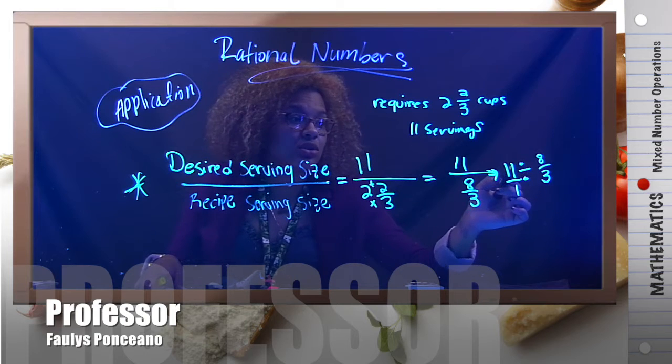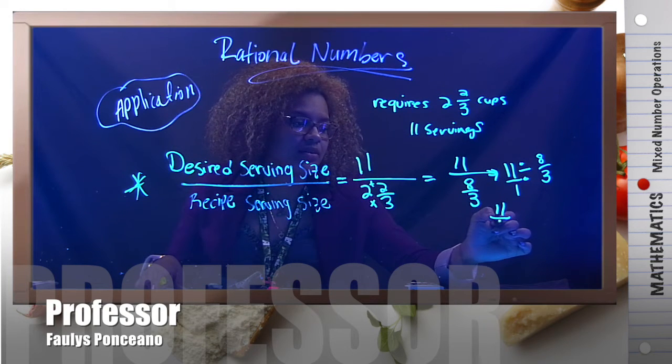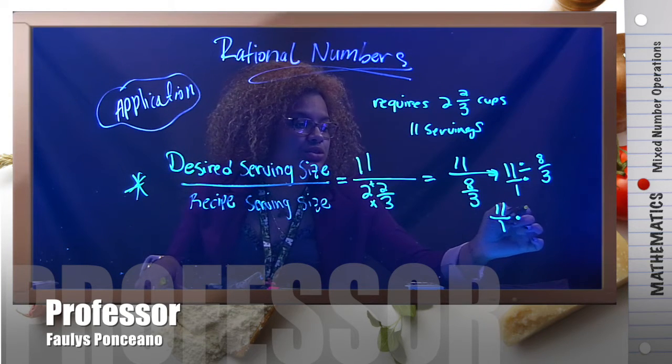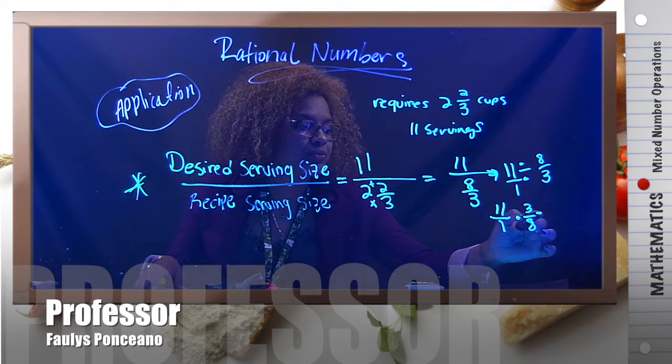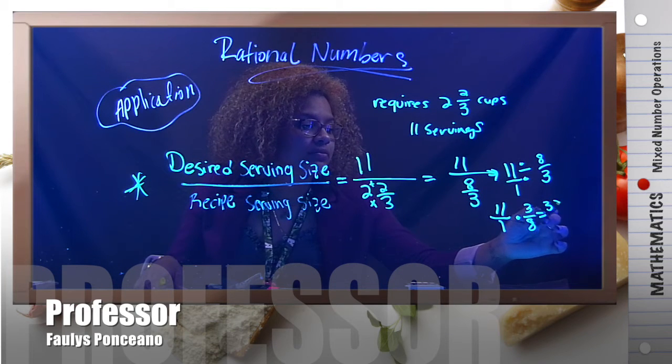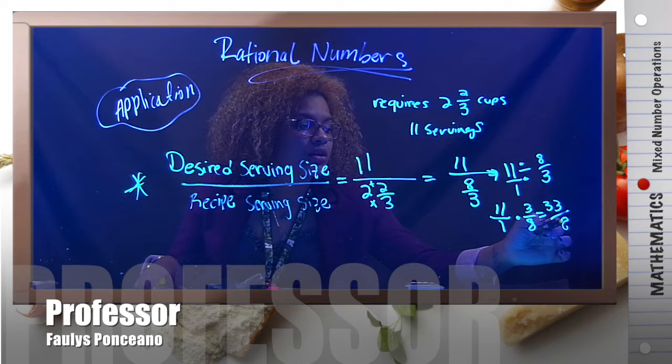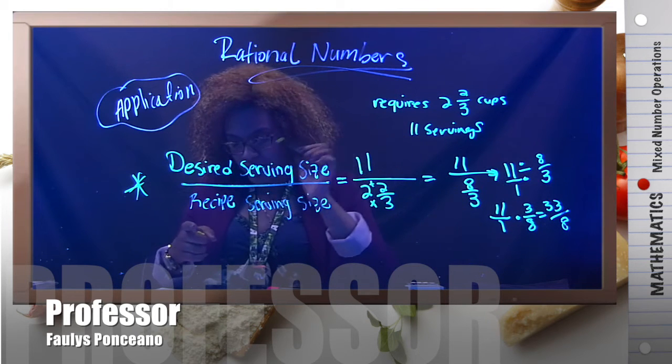We don't divide fractions, we multiply them. We keep, switch, and flip. You multiply and you have 33 over eight.